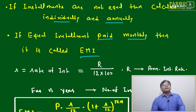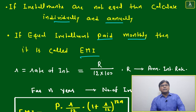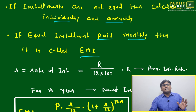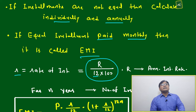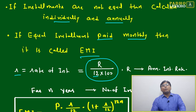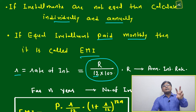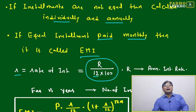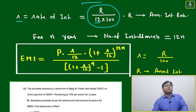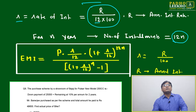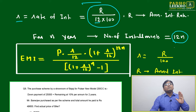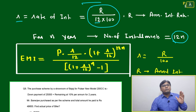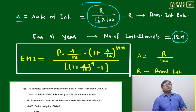If equal installments are paid monthly instead of annually, that is called EMI — Equated Monthly Installment. To calculate EMI, the interest rate r becomes r/12 (since one year has 12 equal months), and the number of installments becomes 12n instead of n years. So the time period in one year becomes 12, and for n years it becomes 12n.